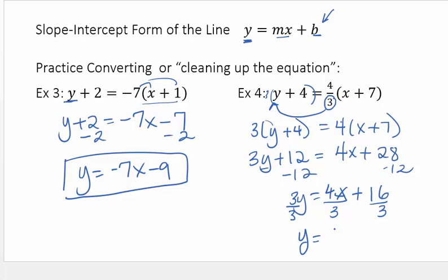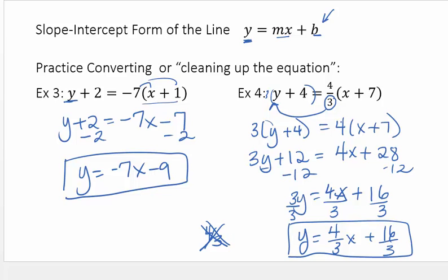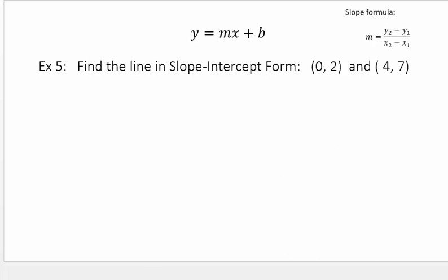So I have y equals 4 thirds x plus 16 thirds. Do not give me decimals. Give me reduced fractions like this. Even if they're improper, leave it like this. And please, please, please, don't ever make your fractions like this. Slanting lines are not okay. You've got to make them stacked up and down.